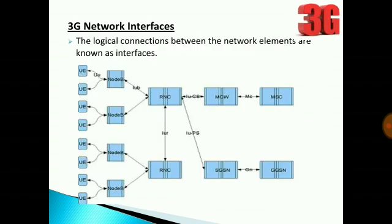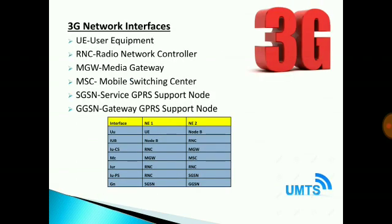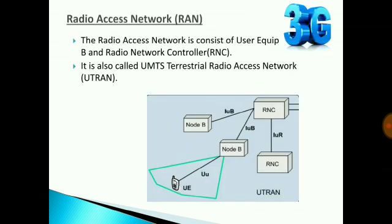This is the 3G network interfaces diagram. User equipment communicates with the Node B through the Uu interface. Node B to RNC uses the Iub interface. RNC to RNC uses the Iur interface. RNC to media gateway uses the Iu circuit switched interface. Media gateway to MSC uses the Mc interface. RNC to GPRS node uses the Iu packet switched interface.